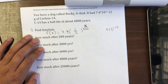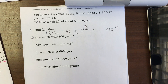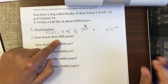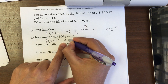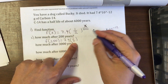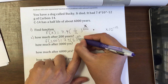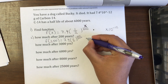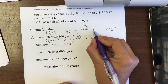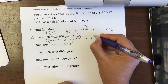For the second question: how much carbon-14 will there be after 200 years? We write f(200) equals 7.4 times one-half to the power of 200 over 6,000, times 10 to the negative 12. Be careful not to write 'times' twice — you only need it once.